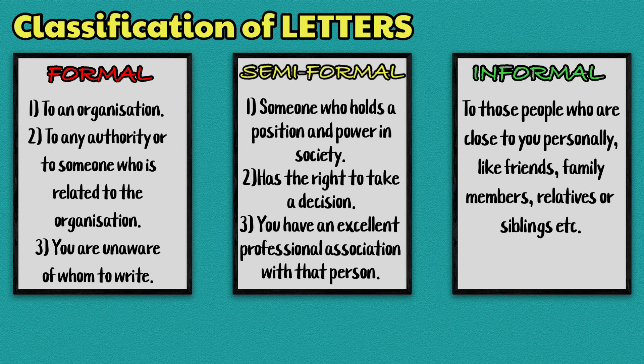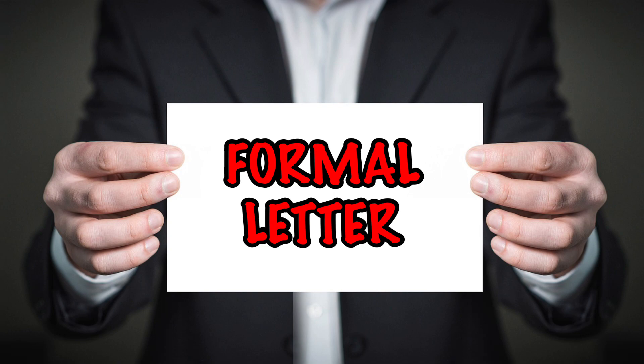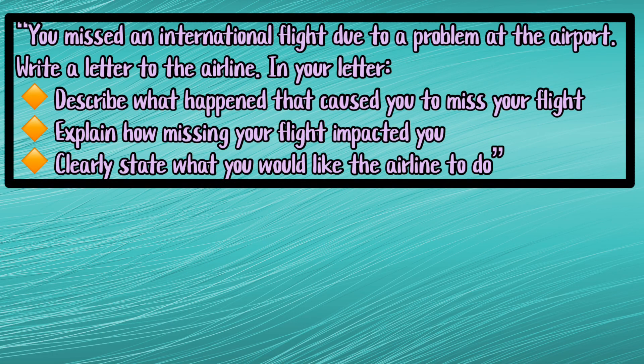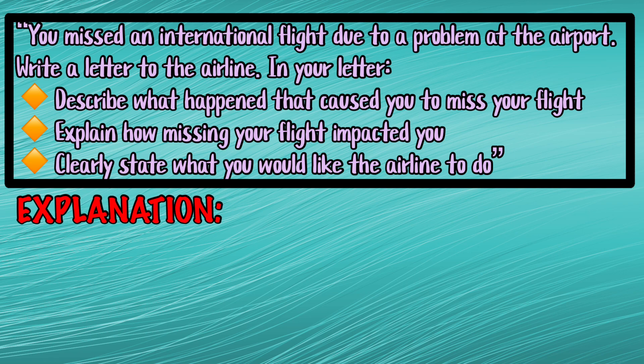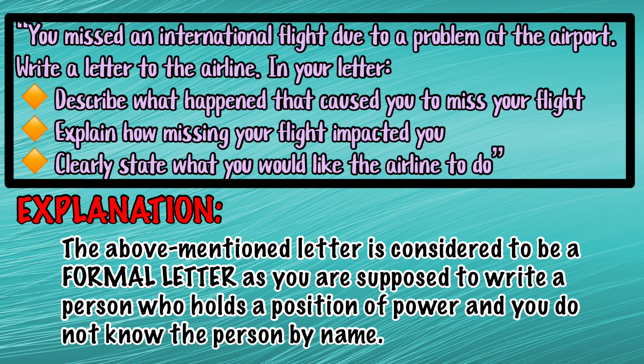Now let's discuss each of these letter types in detail. Formal Letter — let's dissect a sample question: 'You missed an international flight due to a problem at the airport. Write a letter to the airline. In your letter: 1. Describe what happened that caused you to miss your flight. 2. Explain how missing your flight impacted you. 3. Clearly state what you would like the airline to do.' This letter is considered to be a formal letter as you are supposed to write to a person who holds a position of power and you do not know the person by name.